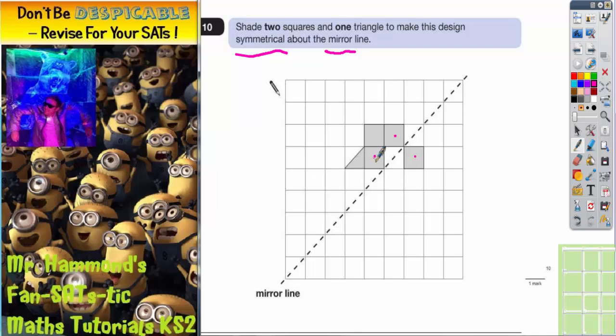This square doesn't have anything symmetrical yet. So if we go on the other side of the mirror line, this square would have to go there. And now this square can pair up with this one.